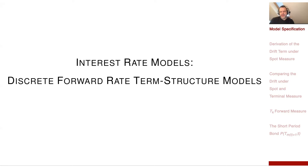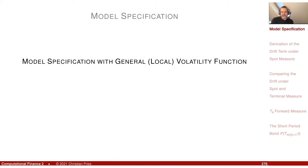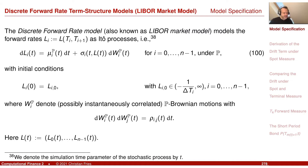The word 'discrete' here refers to the fact that we have some discretization of the time axis in terms of maturities — in terms of interest rate periods. We started with a model specification, a fairly general model specification assuming this tenor discretization.